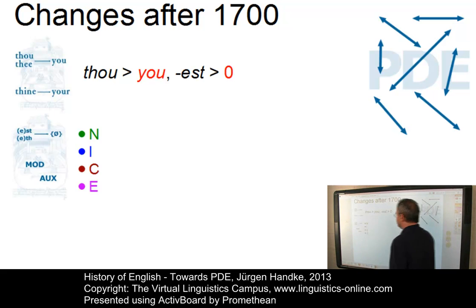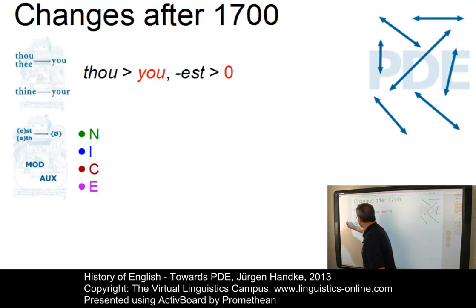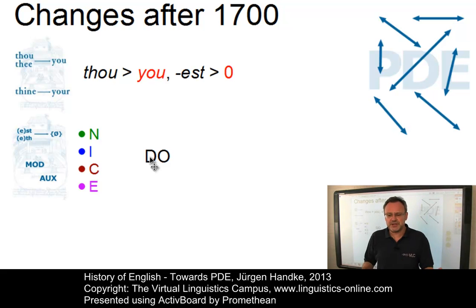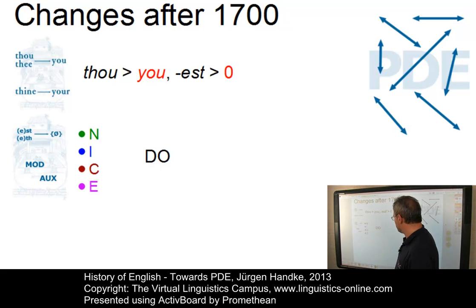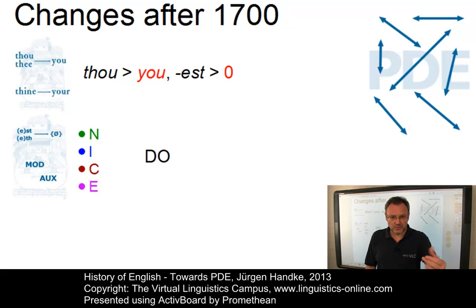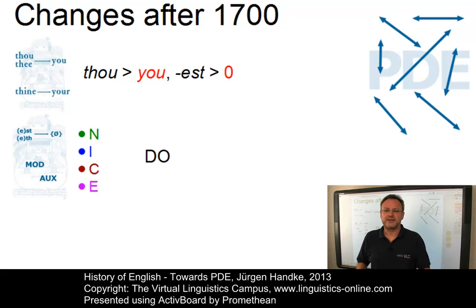And the auxiliary do had come to be used as we use it today, in the NICE context. N for negation: 'I don't go.' I for inversion: 'Do I go?' C for coding: 'I go, don't I?' And E for emphasis: 'I do go.'